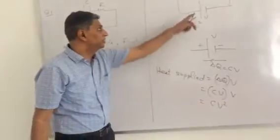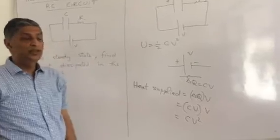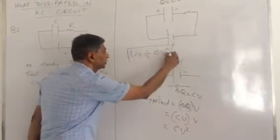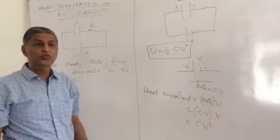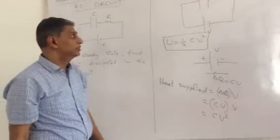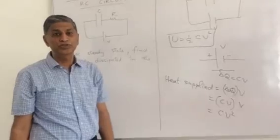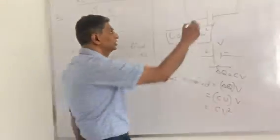Now heat supplied by the battery in the circuit is CV square, and energy stored across the capacitor is half CV square. Where is the remaining energy? The remaining energy is dissipated as heat in the circuit.